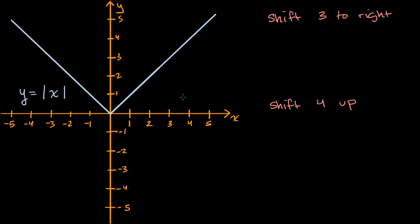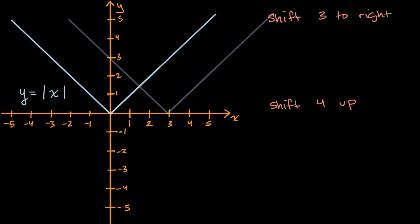All right, now let's do this together. So let's first shift three to the right and think about how that might change the equation. So let's visualize what we're even talking about. If we're going to shift three to the right, it would look like this. So that's what we first want to figure out the equation for. How would we think about it? Well, one way to think about it is, something interesting is happening right over here at x equals three.